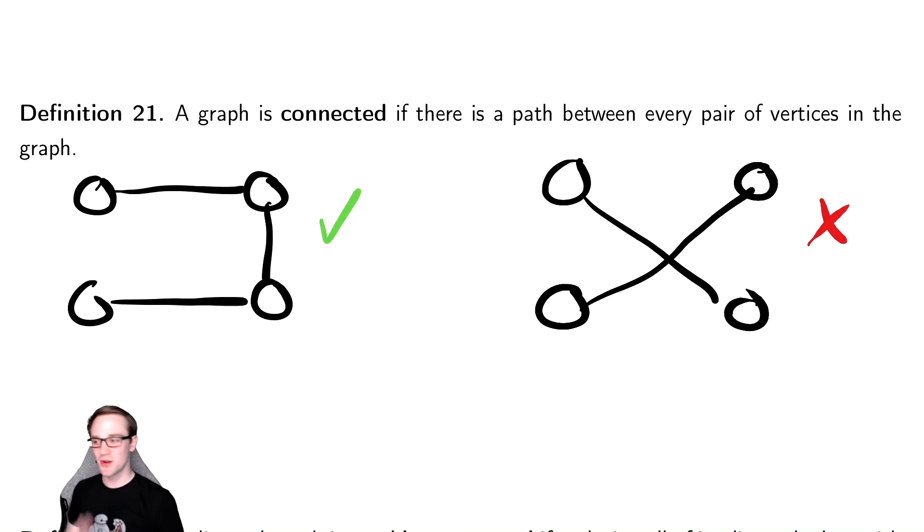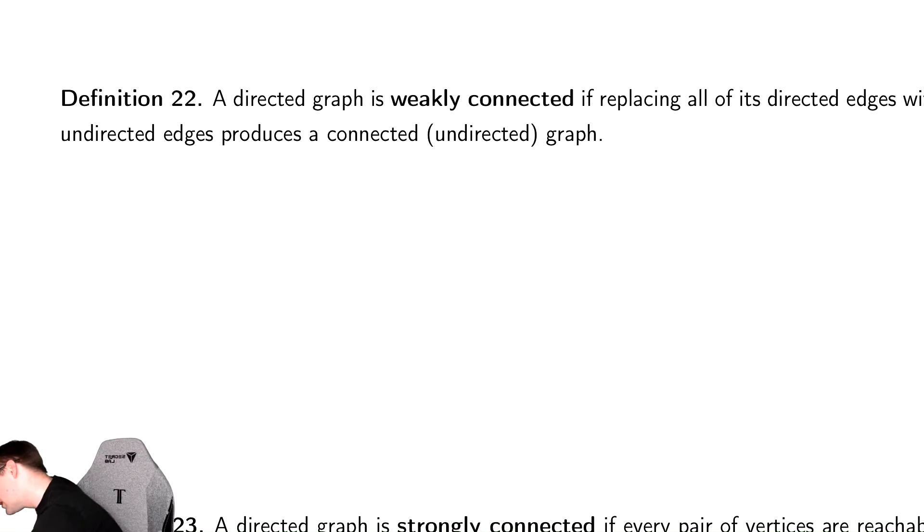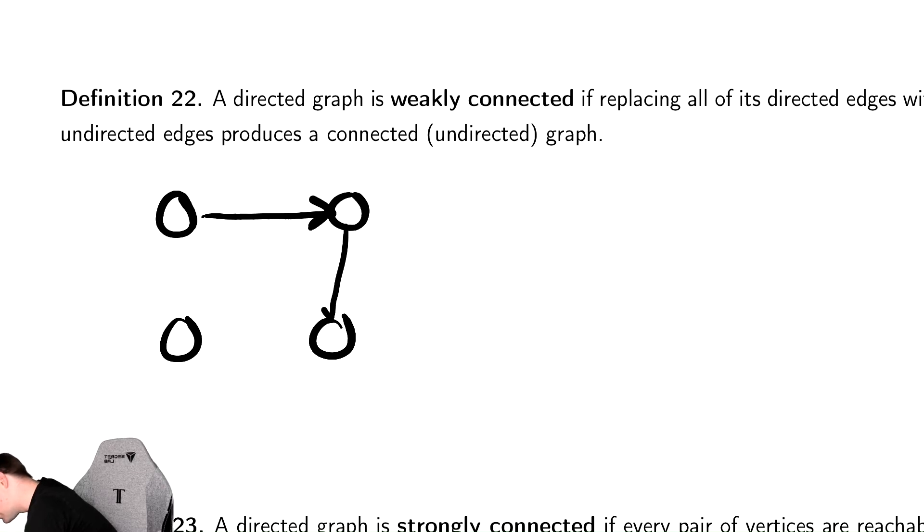There are two other notions of connectedness which are worth mentioning, which is that some graphs are directed. We mentioned this before. So connectedness might seem a little weird there. So I'll give an example. So let's do our same graph that we had, where we go in this sort of box shape.